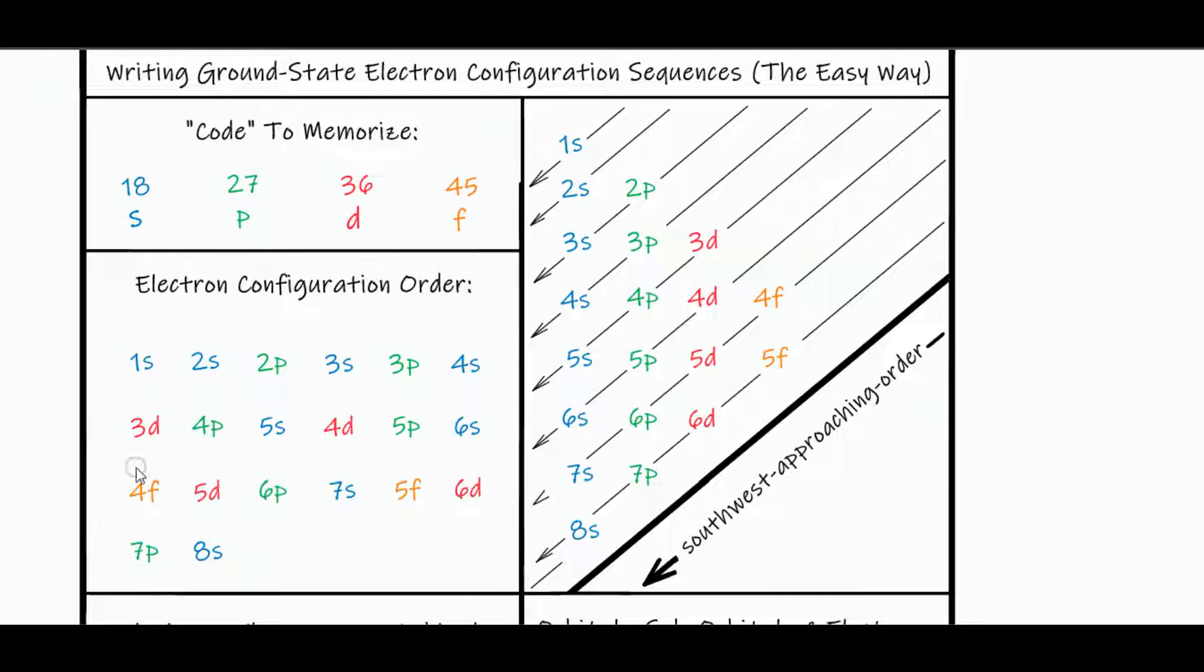And then to figure out the order, instead of memorizing, you can draw the chart and then decipher the order through a southwest approaching order, skipping a row, coming down per orbital, and then you have all this data.